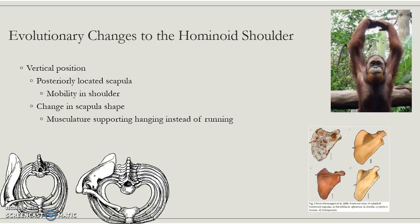When we talk about hominoids, we're talking about specifically our ape-human lineage. Here we're looking at changes to the hominoid shoulder from other mammal shoulders. Our shoulder is yet different, and we have a more posteriorly located scapula.